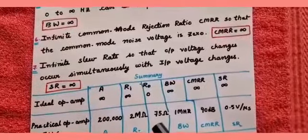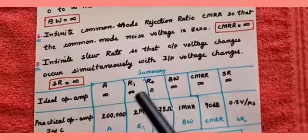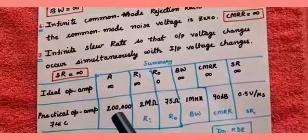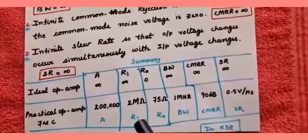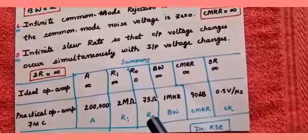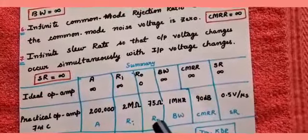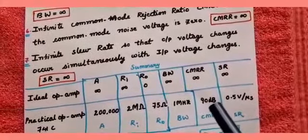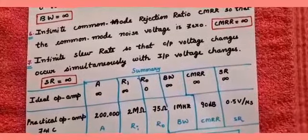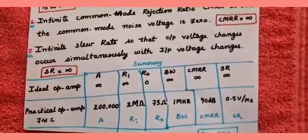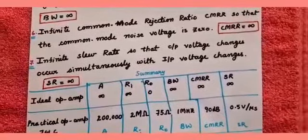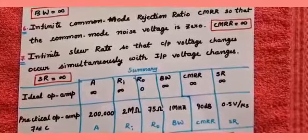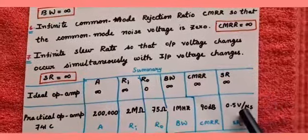Here I have summarized a table comparing the ideal op-amp and a practical op-amp, taking the 741C op-amp as an example. For the practical 741C: voltage gain A is around 2 lakhs (200,000), input resistance is 2 mega ohms (10 to the power 6 ohms), output resistance Ro is 75 ohms, bandwidth is 1 megahertz, CMRR is 90 dB — where values are converted to decibels using 20 log of the given value — and slew rate is 0.5 volts per microsecond.